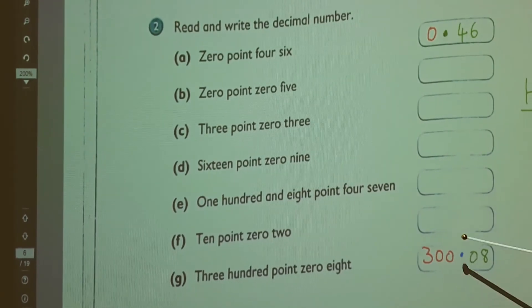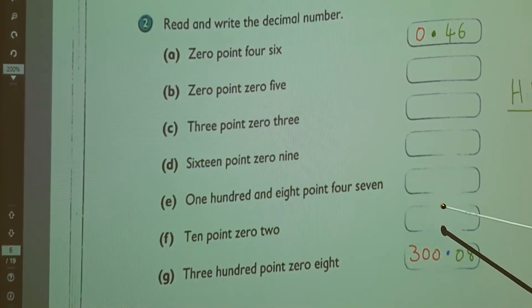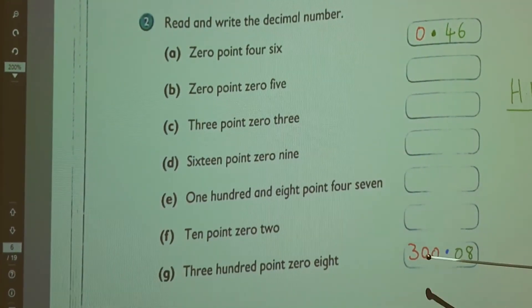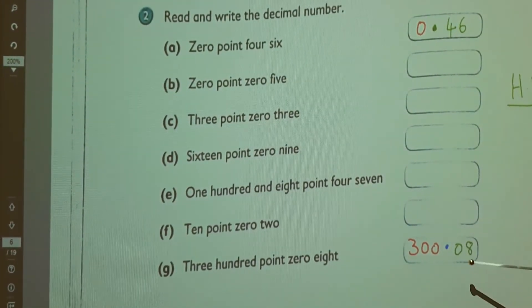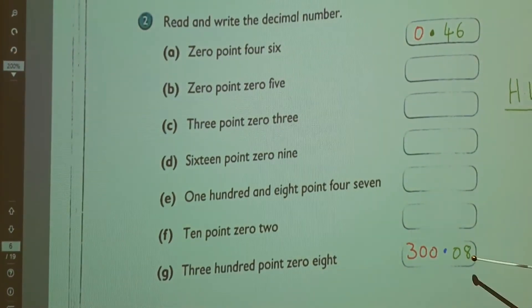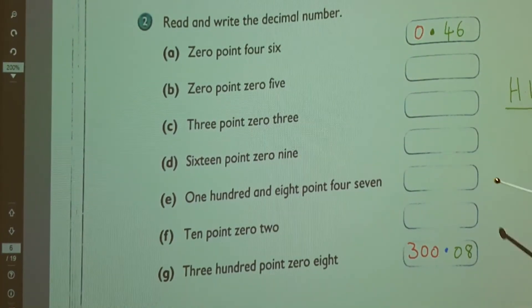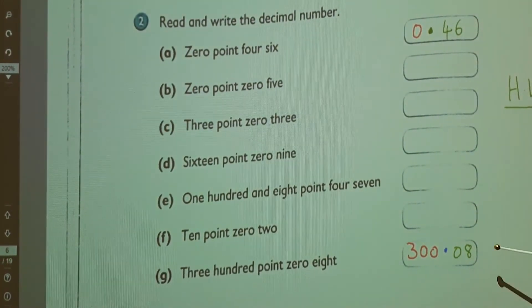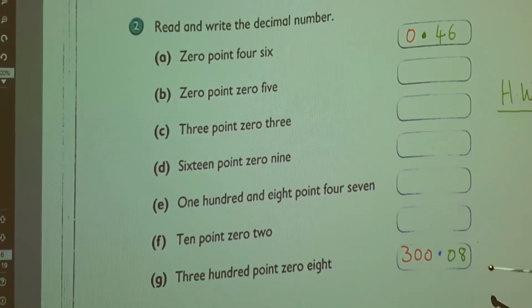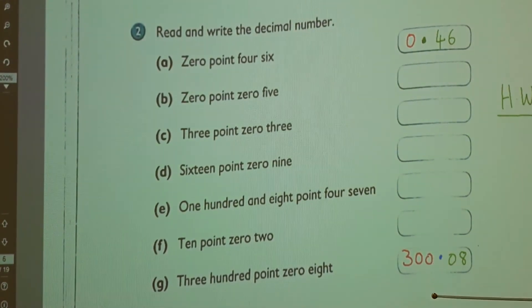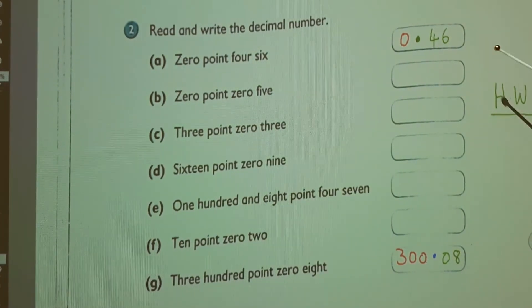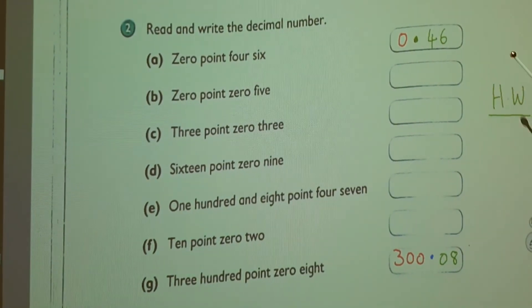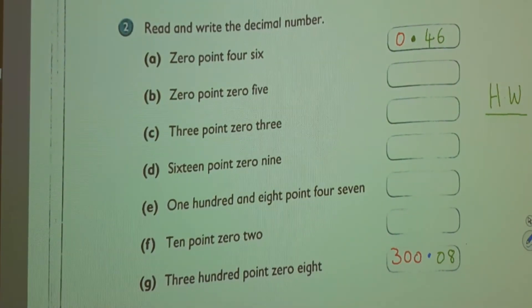300.08. In this, what do you mean by this? What's tenth? Tenth is 0. What is the hundredth place? It is 8. This is actually 8 by 100, that is 0.08. So this becomes 300.08. This is all you do as homework. And if you have any doubts or need any clarification, please contact me. Thank you.